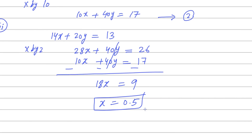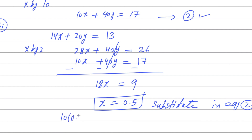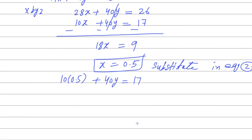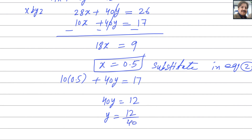Substitute X equals 0.5 into equation 2: 10 times 0.5 plus 40Y equals 17, so 5 plus 40Y equals 17, giving 40Y equals 12, and Y equals 12 divided by 40, which simplifies to 0.3.